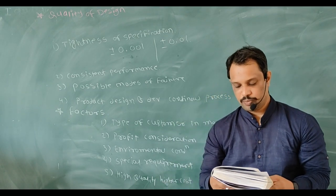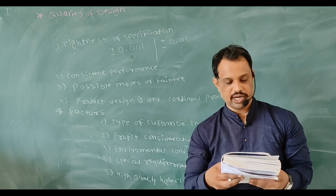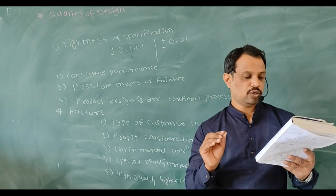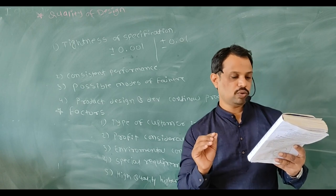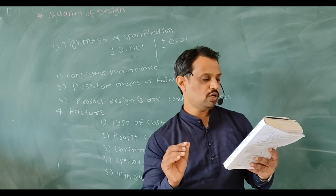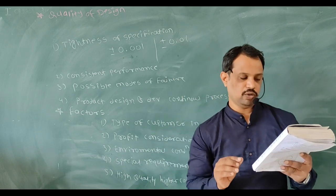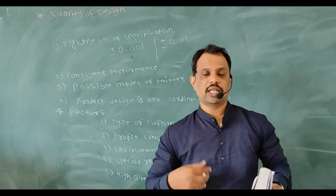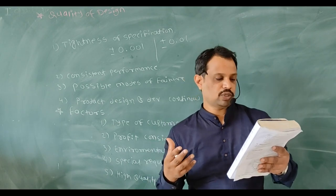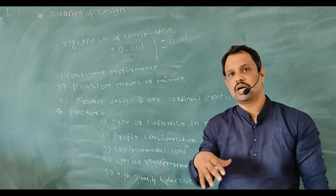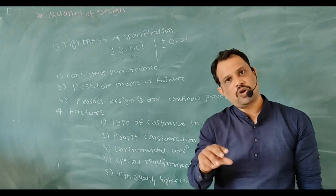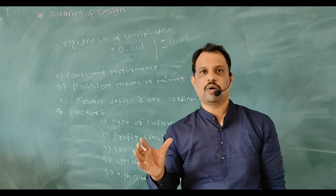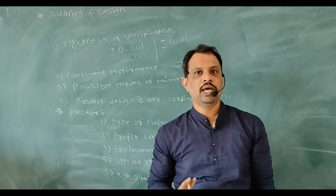Special requirements of the product: generally, the greater the requirement for strain resistance, fatigue resistance, life, and interchangeability of manufactured items, the closer the tolerance must be to give high-quality goods. Higher quality of design means higher cost. If your requirements for strain, fatigue resistance, life, and interchangeability are high, you must use closer tolerances, and as tolerances become closer, your product cost ultimately increases.